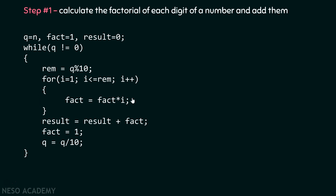We then run a for loop from 1 to the remainder to calculate its factorial. After that, we store the factorial result in the result variable, reinitialize fact to 1, and divide q by 10, storing the quotient back into q. This way, the next iteration extracts the second-last digit, and we repeat the process.